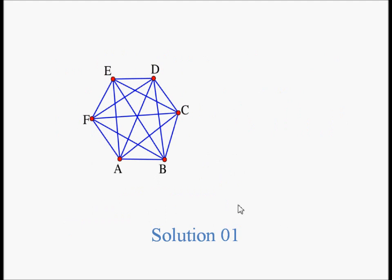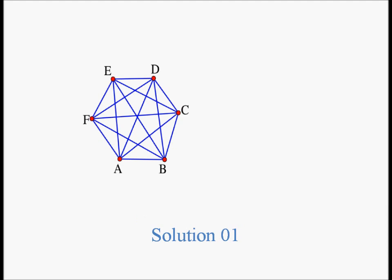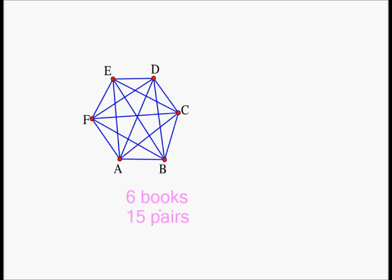We're going to solve this problem by analyzing the case with six books and generalize from there. We discussed this picture: I have six books A, B, C, D, E, F and I have 15 pairs. So let's write down: six books give 15 pairs. Note the letters are books and the lines connecting the dots — or books — are pairs.